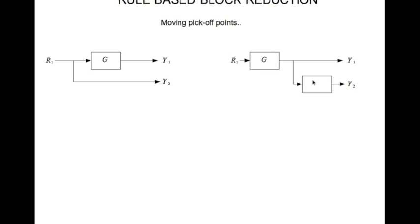If I move it like so now we have to figure out what do we need to put in here so that the output y2 equals r1. If this is just 1 then this output is going to be r1 times g but what we want is just r1 therefore r1 times g divided by g will give us r1. So this transfer function should be 1 divided by g.